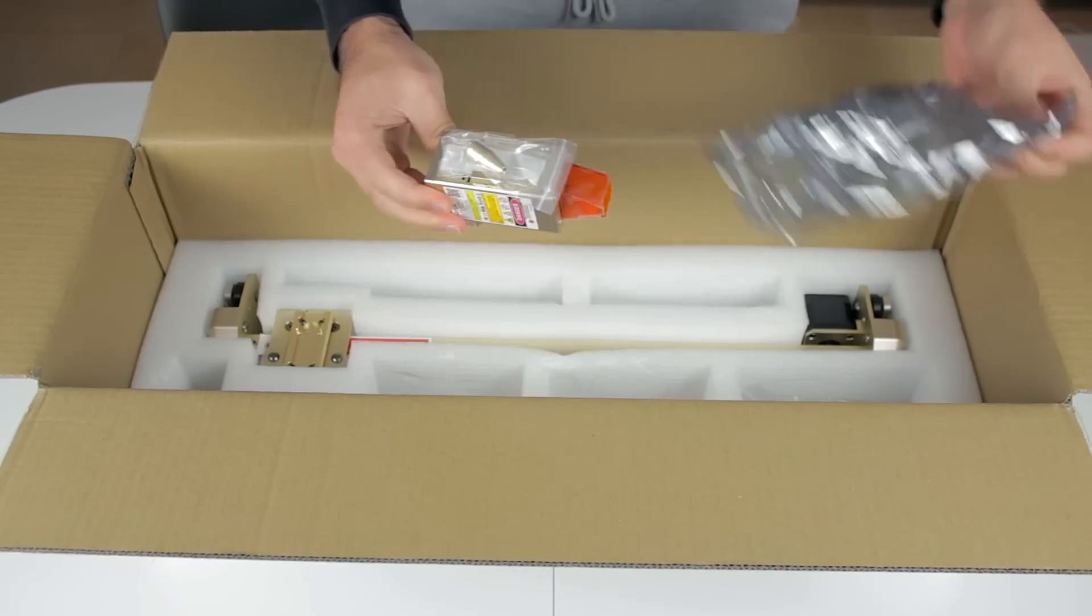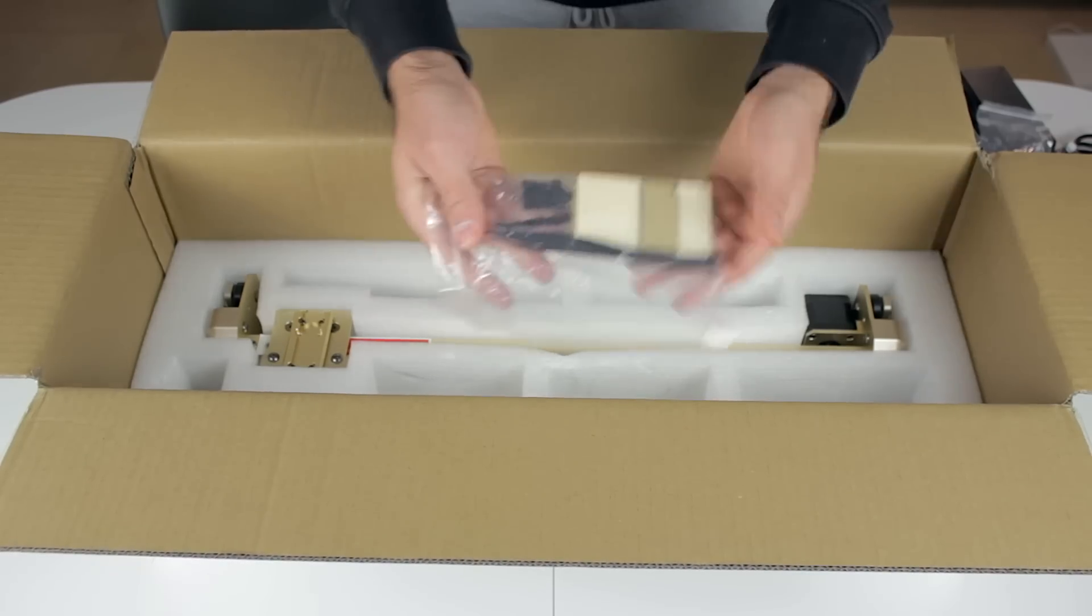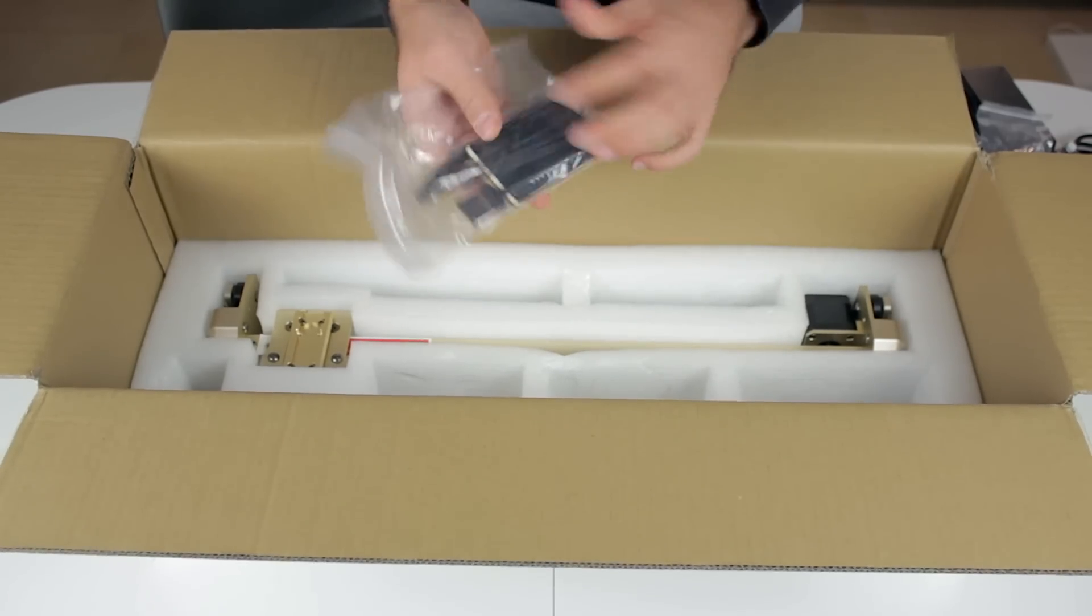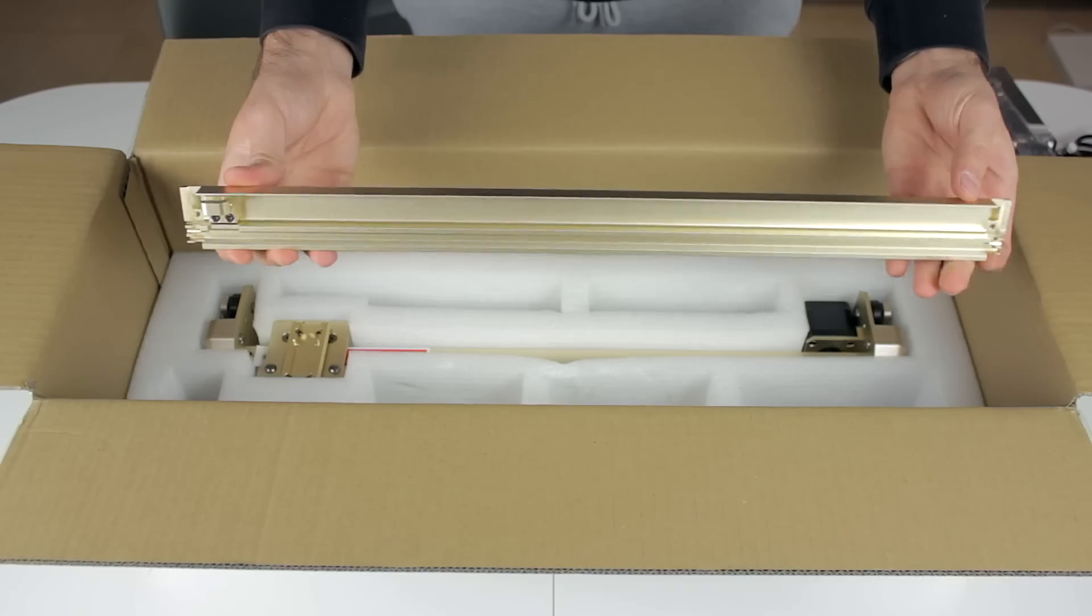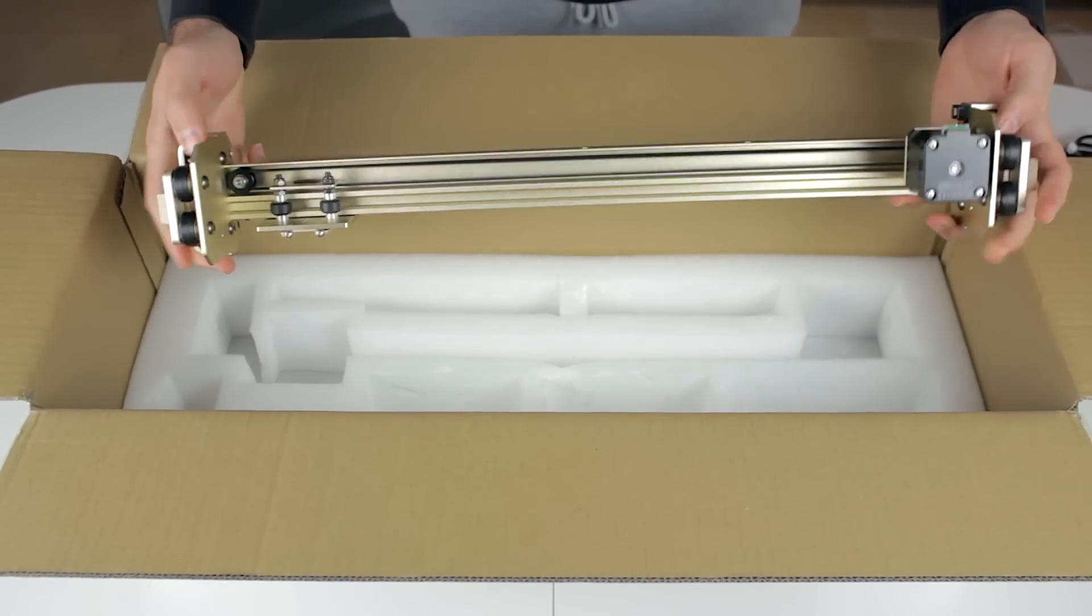This time they are orange and not green as always. Next, we find the laser head itself in beautiful golden color with a matching air nozzle. We also have some materials to test, another profile, the other side profile, and finally what looks like the X-axis gantry of the machine. And that's it.